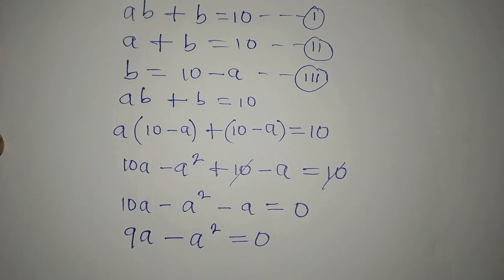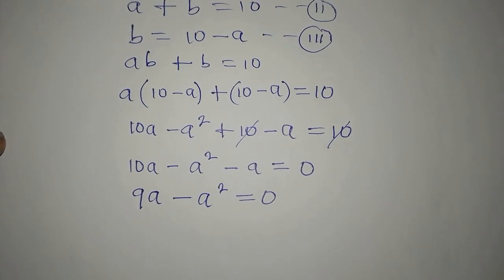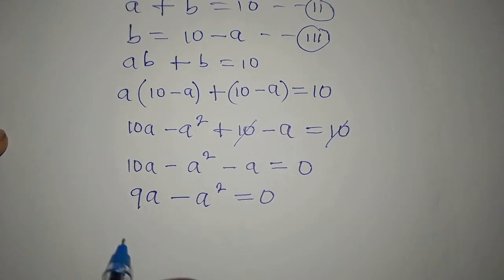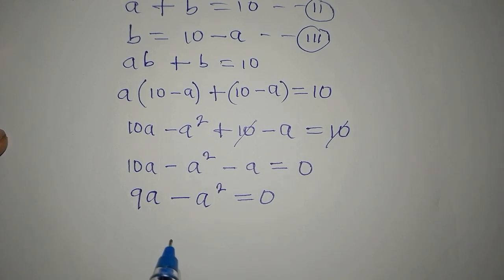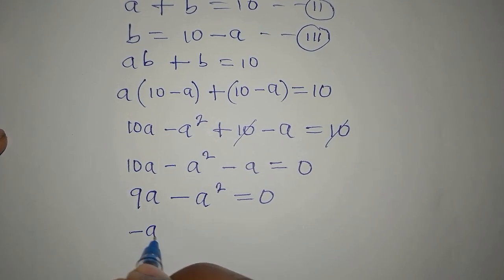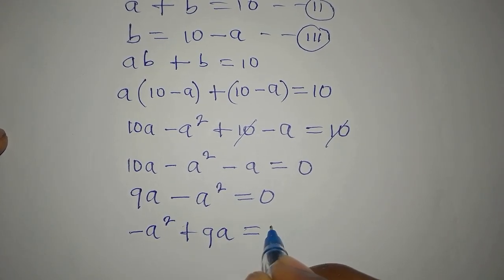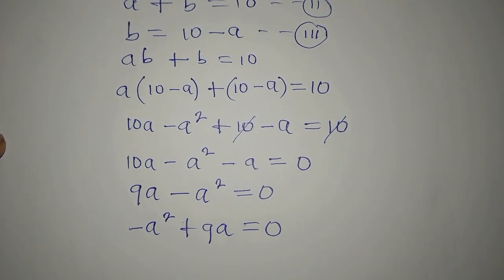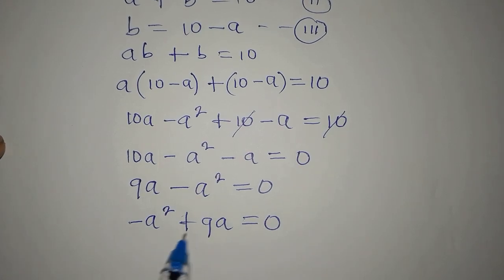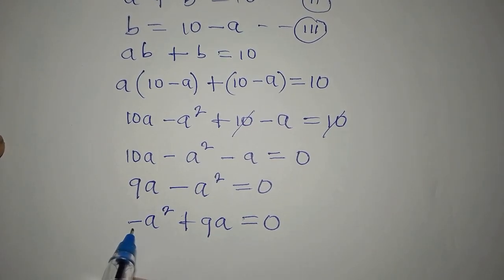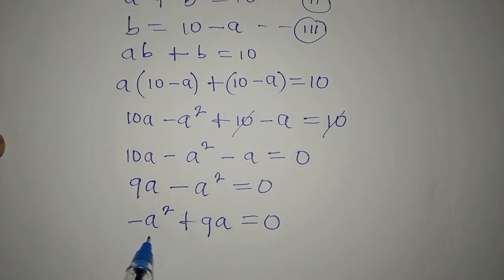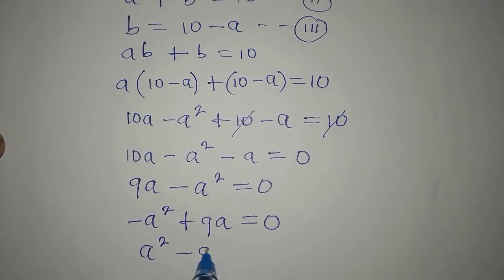The term with the highest power should come first, so we write minus A squared plus 9A equals 0. We are not expected to have a negative leading coefficient, so we multiply everything by negative 1, giving us A squared minus 9A equals 0.